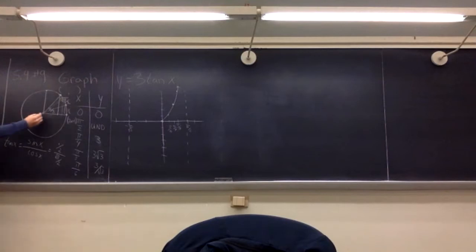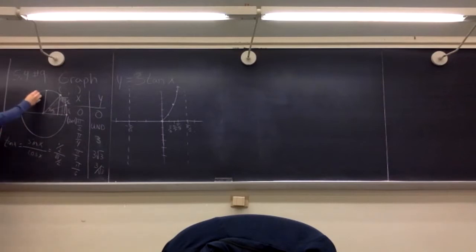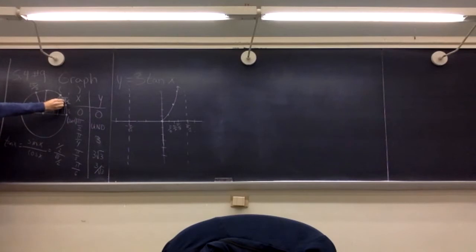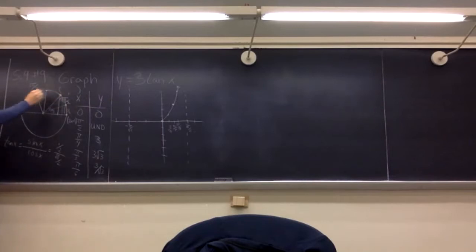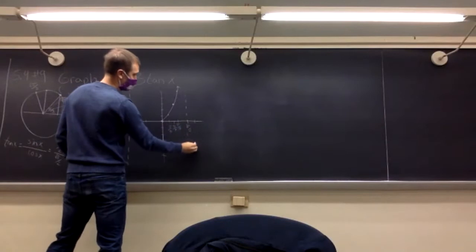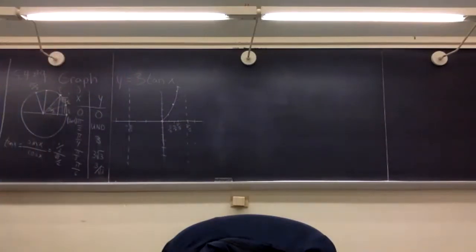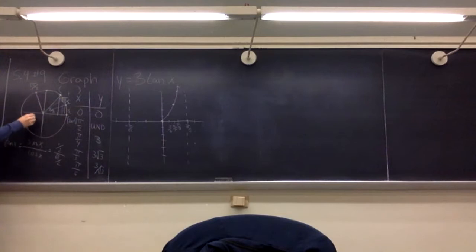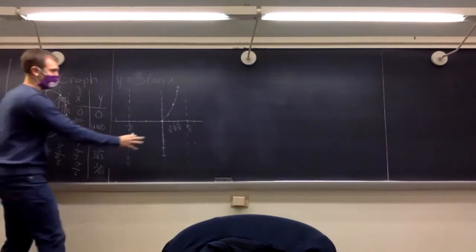Now what happens when we move into the next quadrant? All these values are going to have the same magnitude, but because the x-value is negative, whatever tangent we have for those angles will be the same as the first quadrant but with the opposite sign. So we can plot things down here in a similar fashion, but we'll skip to the negative angles centered at zero.